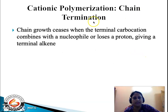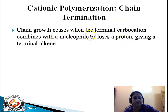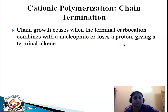Under chain termination, the cationic polymerization reaction is very sensitive to solvent. If there is a nucleophile present in the solvent, chain growth will stop and the terminal carbocation will combine with that nucleophile. Alternatively, the terminal carbocation can lose a proton — that is, the positive charge on the terminal carbon atom is lost — giving rise to a polymer.